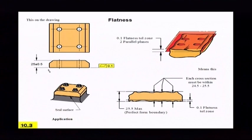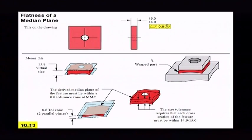So what they have here, this is just you put a flatness on something. It's two parallel planes that are 0.1 apart. That's still the same. But it's this new one, flatness of a median plane.